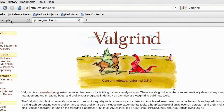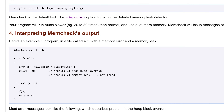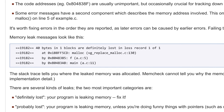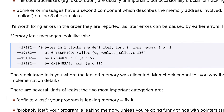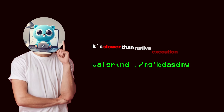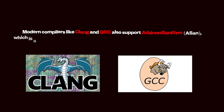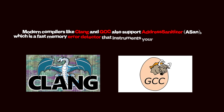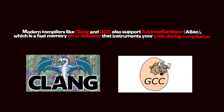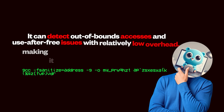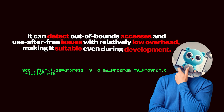Valgrind is another powerful tool for detecting memory errors. It runs your program in a special instrumentation environment and flags memory misuses like invalid reads or writes, use-after-free, memory leaks, etc. It's slower than native execution but invaluable for diagnosing complex bugs. Modern compilers like Clang and GCC also support AddressSanitizer (ASAN), a fast memory error detector that instruments your code during compilation. It can detect out-of-bounds accesses and use-after-free issues with relatively low overhead, making it suitable even during development.